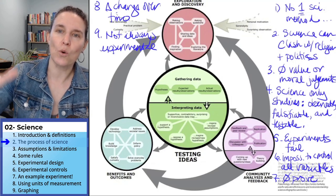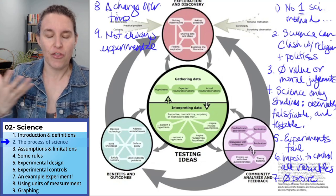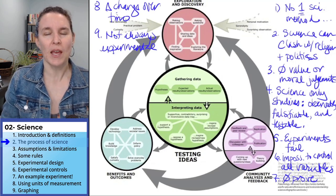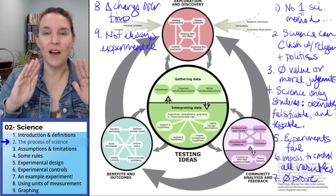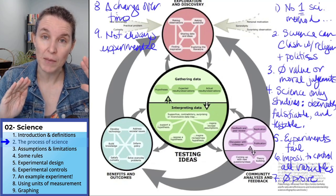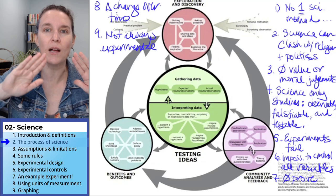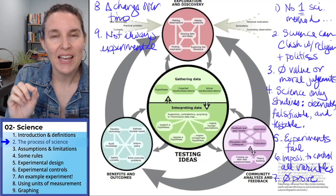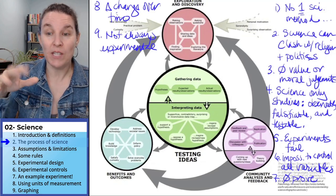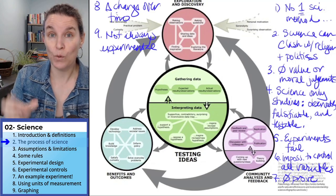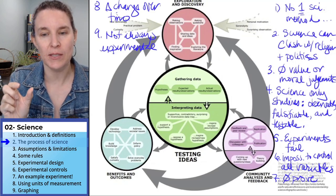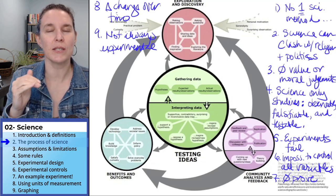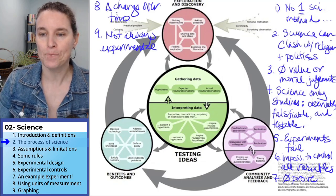That's sort of an unorganized pile of things to consider as we move forward. Next up, we're going to talk about some of the assumptions that we make when we talk about science, as well as some of the limitations of science. Given what we've done so far in two relatively lengthy clips about science, I bet you'd be able to come up with some of those assumptions and limitations.